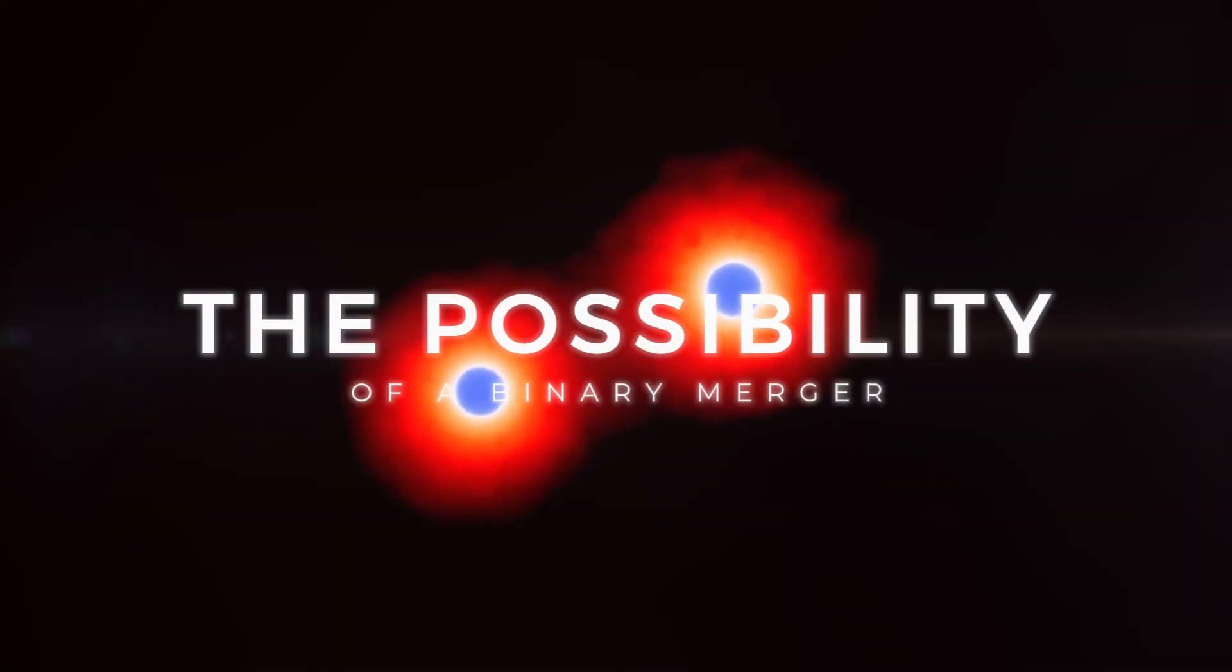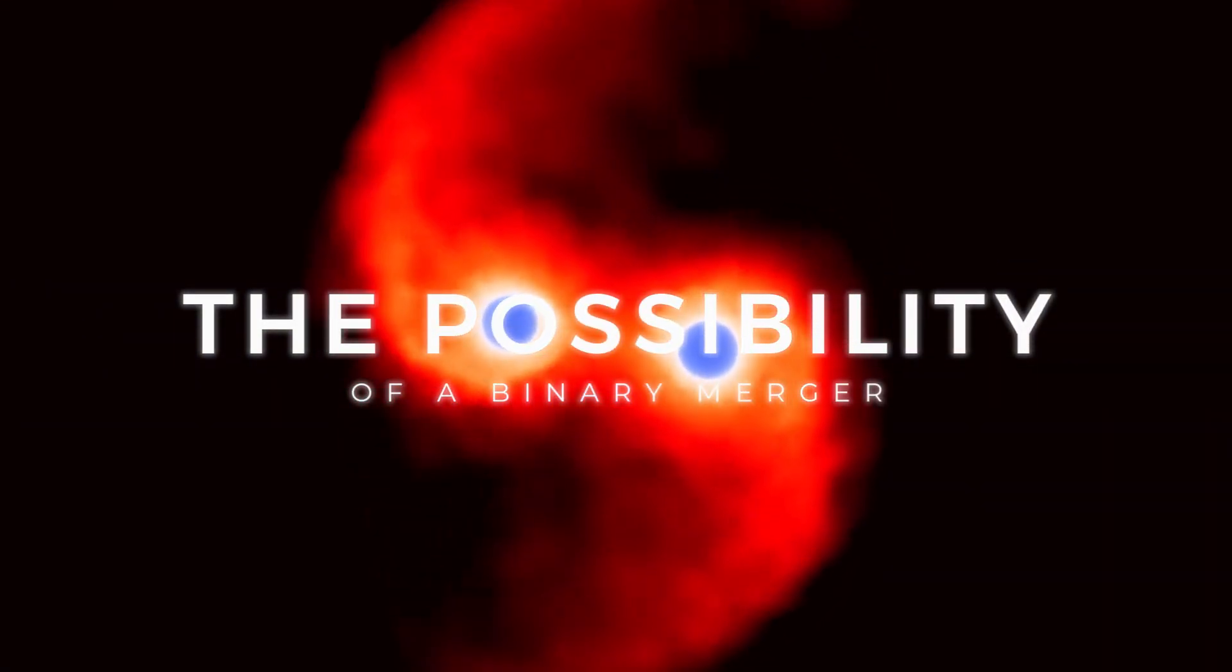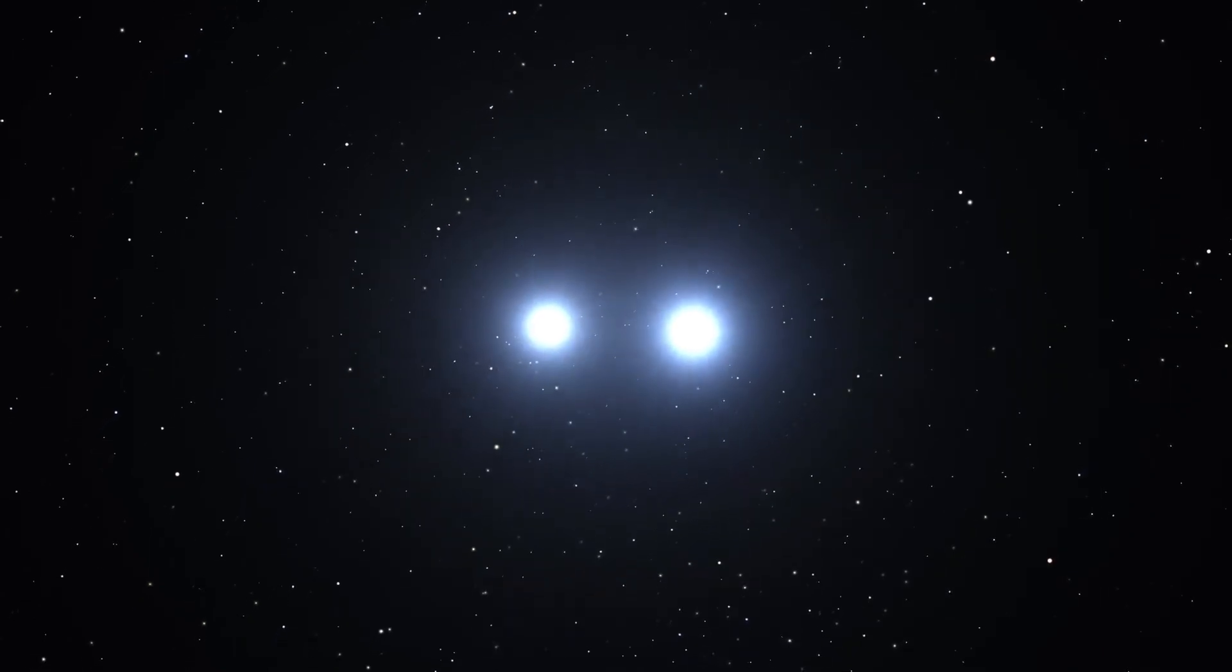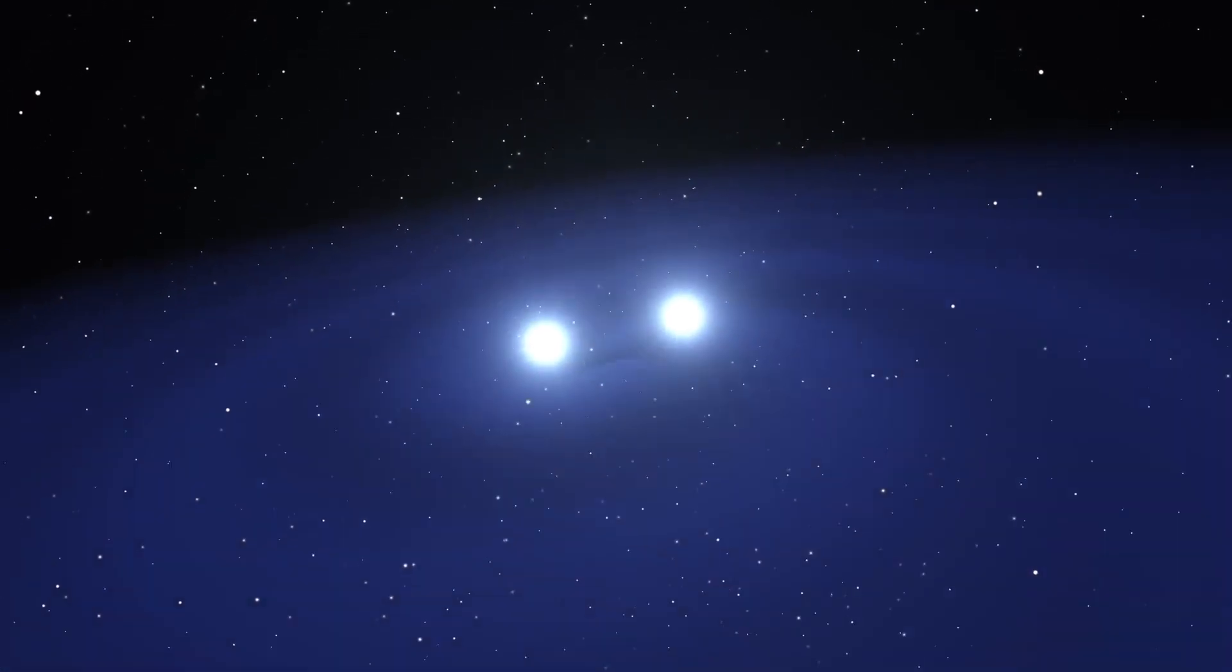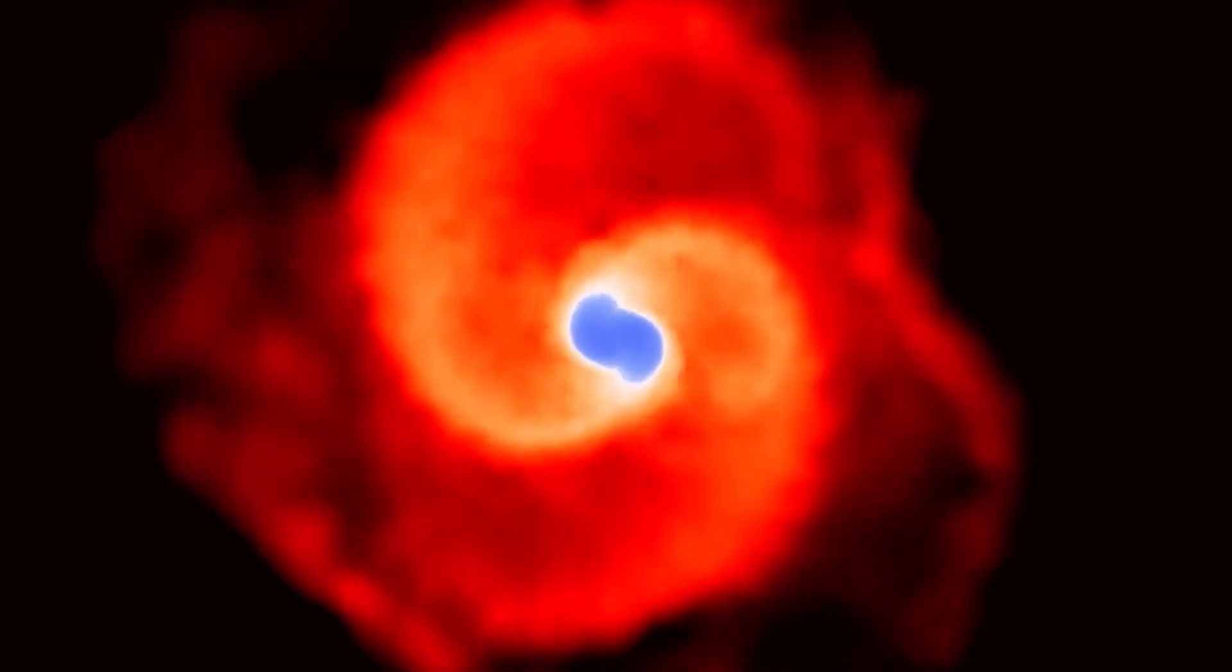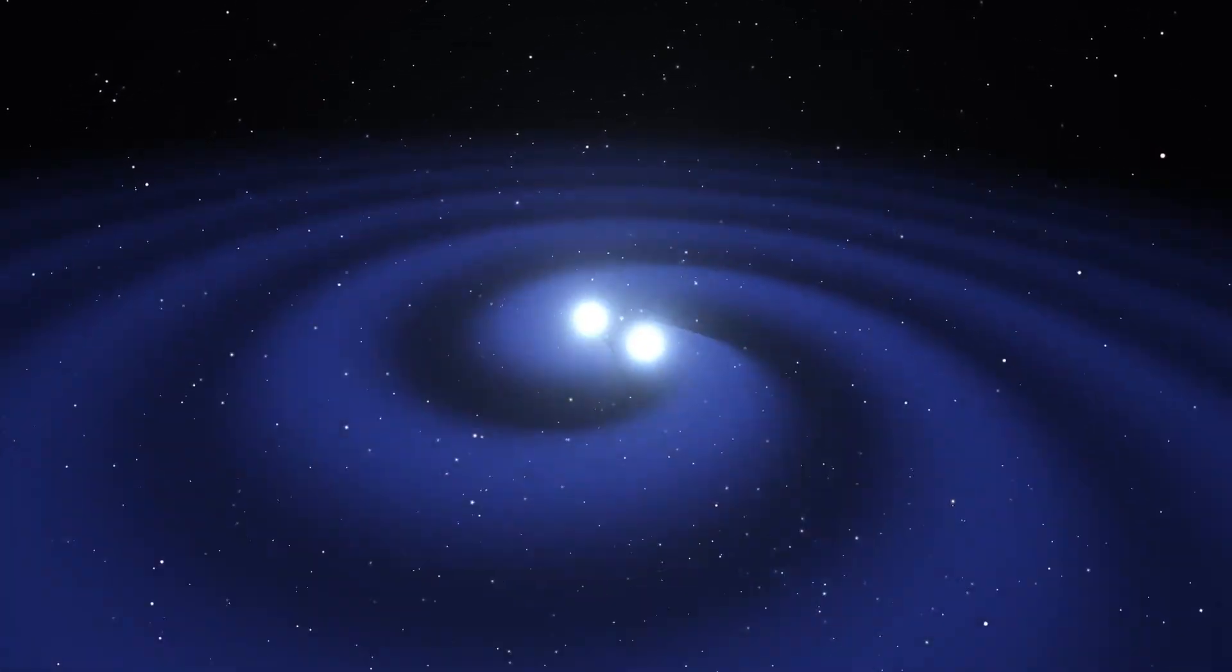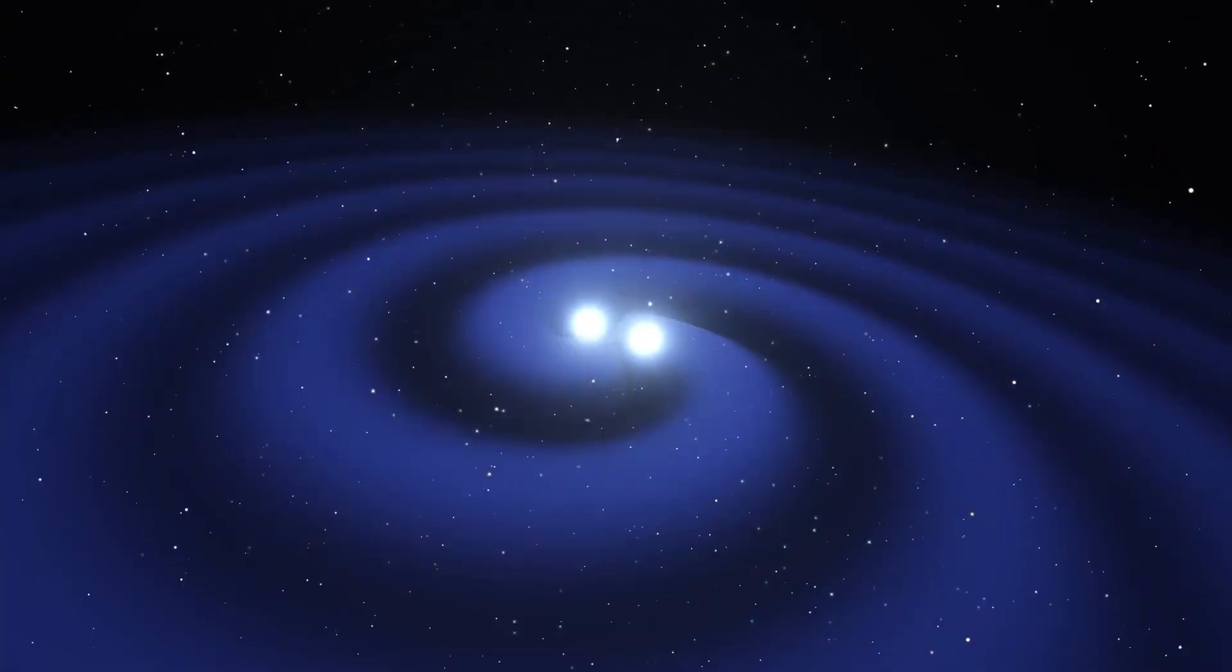However, a more intriguing theory has emerged: the possibility of a binary merger. This phenomenon occurs when two closely orbiting stars become one, typically due to gravitational wave-induced energy loss or tidal effects. Such a merger could cause a surge of energy and alter the system's appearance.